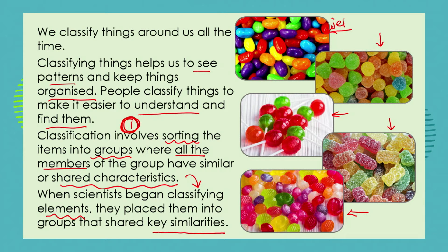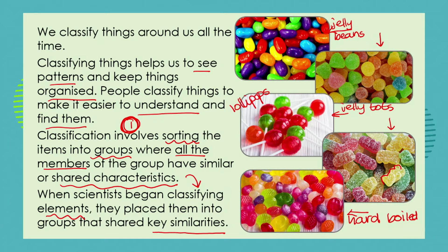So what do we have here? We've got some jelly beans, some jelly tots, some lollipops or stick sweets, some hard boiled sweets, and some soft jelly sweets in the shape of teddies — jelly teddies. What we've done first of all is to sort all the similar sweets into different groups.